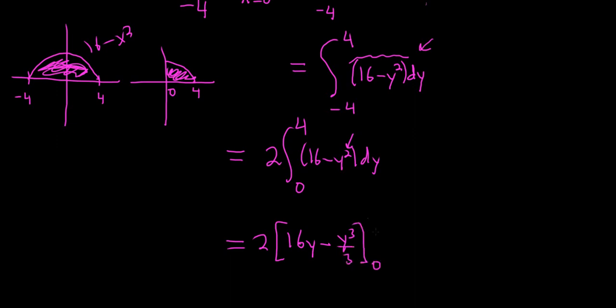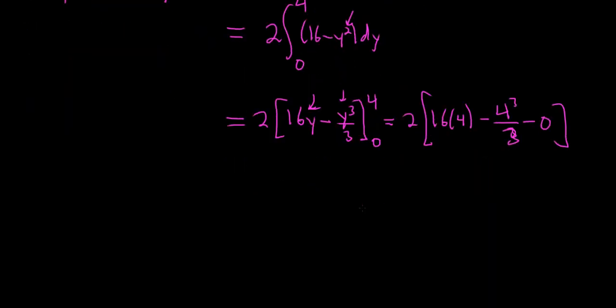Let's keep going. This is 2 times bracket. Plug in 4, so we get 16 times 4 minus 4 cubed over 3, and then subtract and plug in 0. You just get 0 because when you plug in zeros for the y's they all vanish.